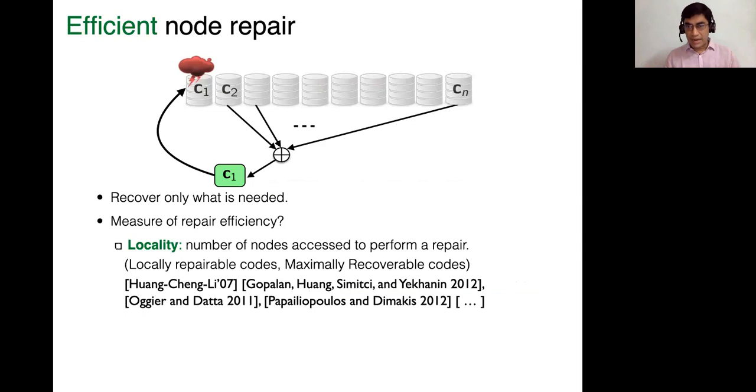And that is actually the important node repair problem in coding for distributed storage. So we would like to efficiently repair this missing node, and so you just want to recover what is missing or what is needed. And an important question then is what is our measure of efficiency. Clearly, we don't want to recover the full data. So two measures have been really used a lot in the literature and in practice. One is locality.